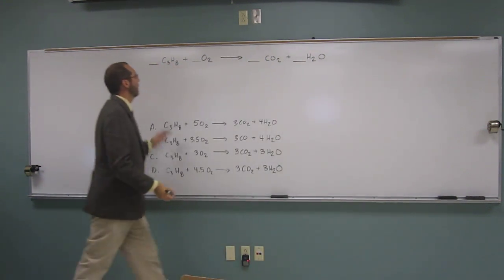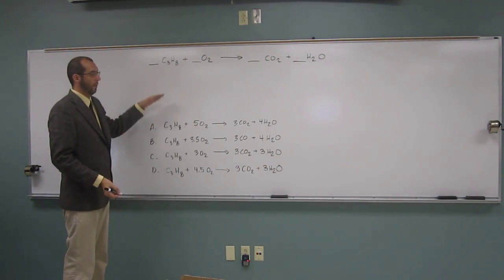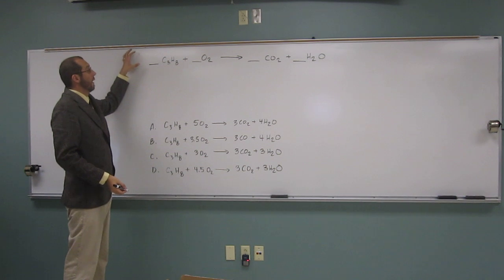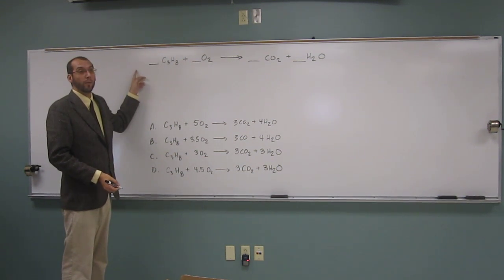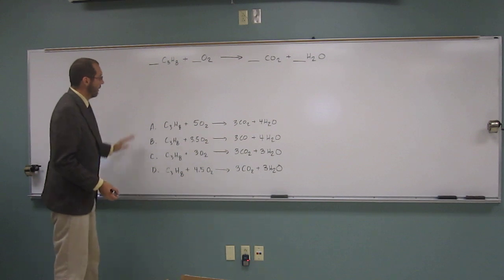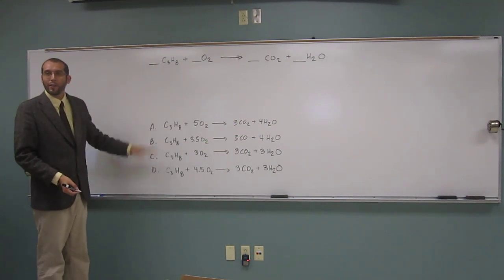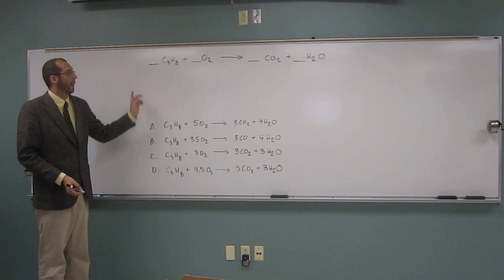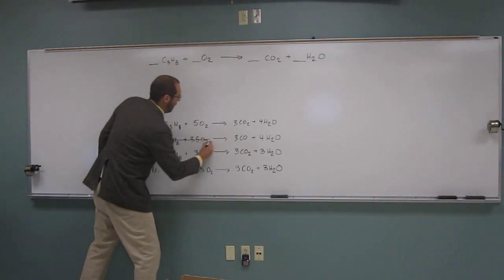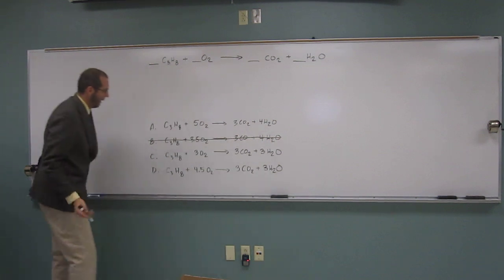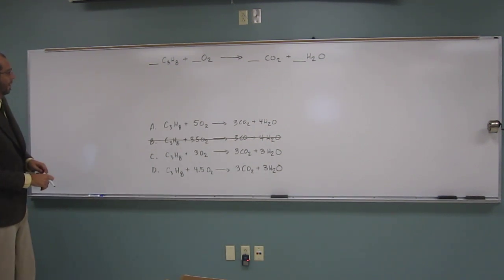And remember, what we're going to do is balance this and figure out which one of these has the same coefficients that is from the equation of the balance. So can I cancel out any of these already without even looking at balancing it? B and D. B, definitely. And D, why would you say that? It has a decimal of 4.5.